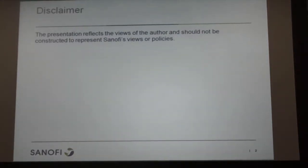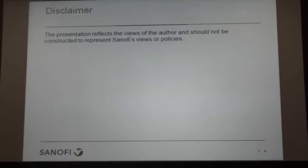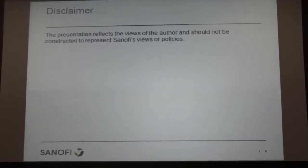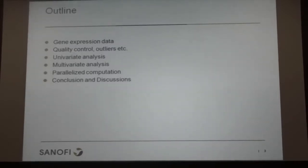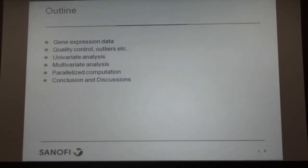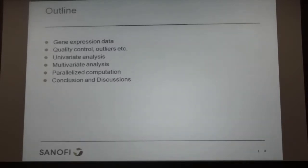This is a very typical thing for people in our highly regulated industry to do — and this is just my personal opinion, not my company's opinion. First I present some gene expression data, then an actual case study on how to analyze it. We'll do quality control to detect outliers, then univariate analysis, then multivariate analysis, and briefly cover how to implement this on the SunGrid Engine.